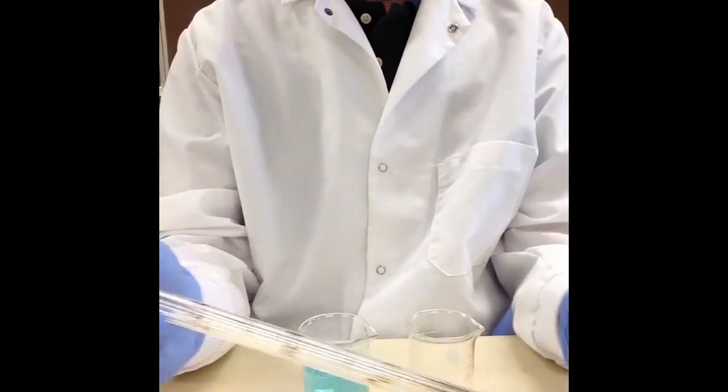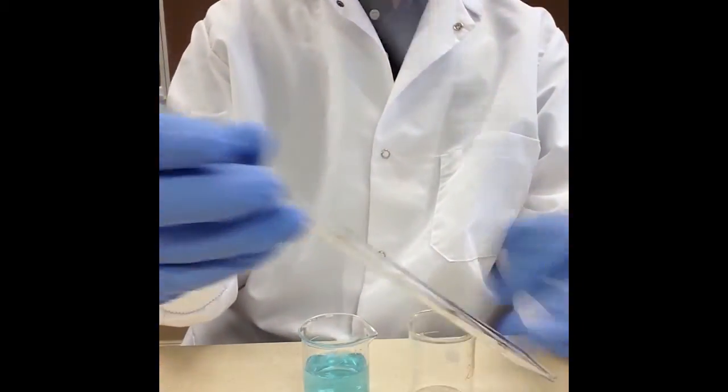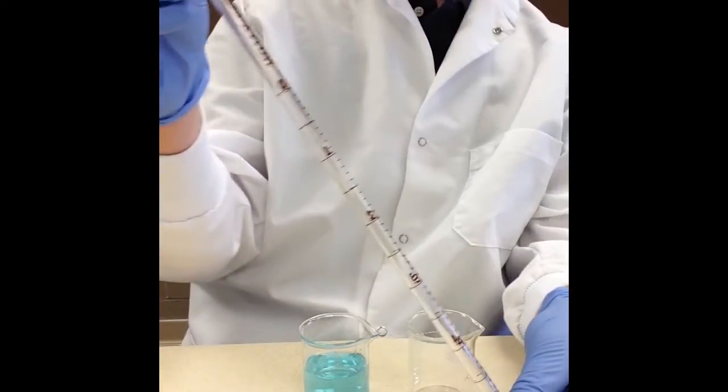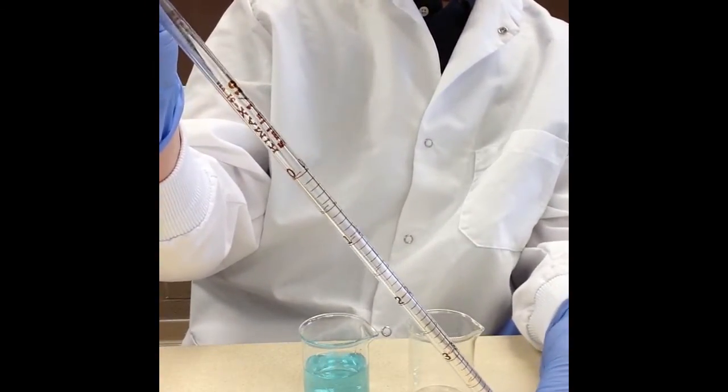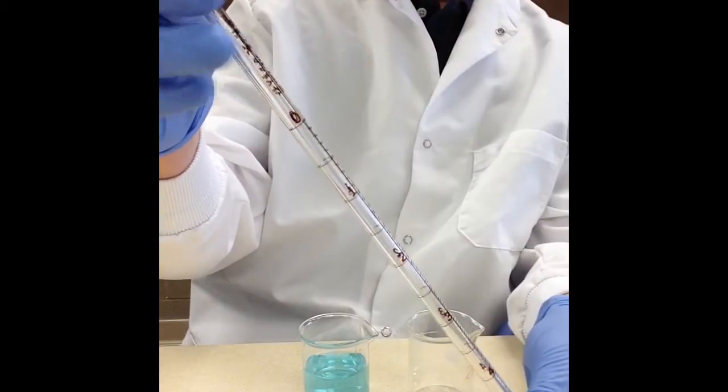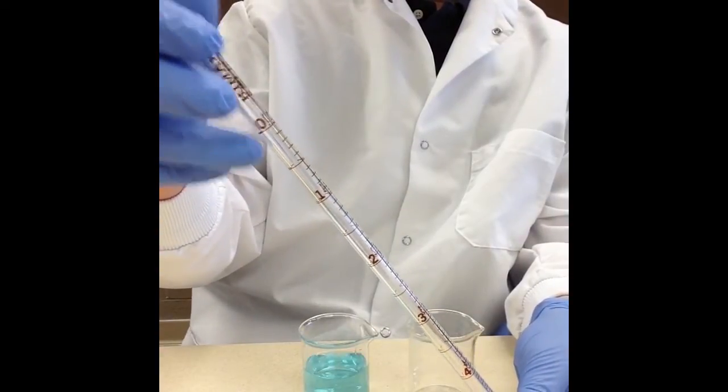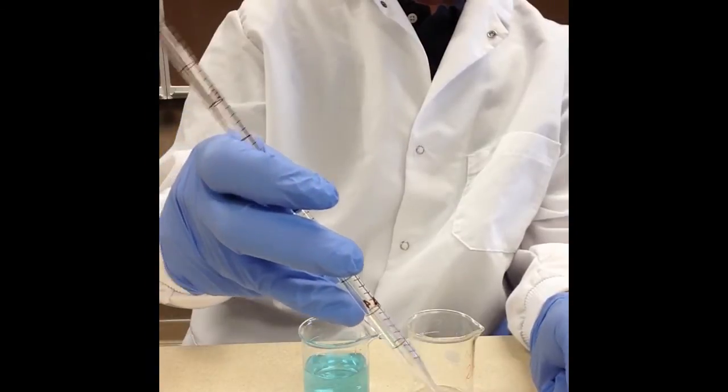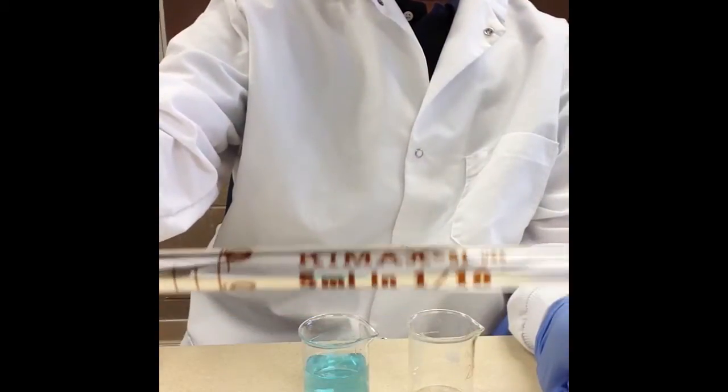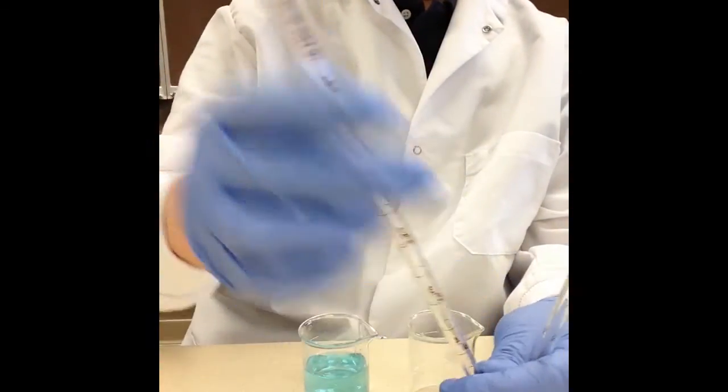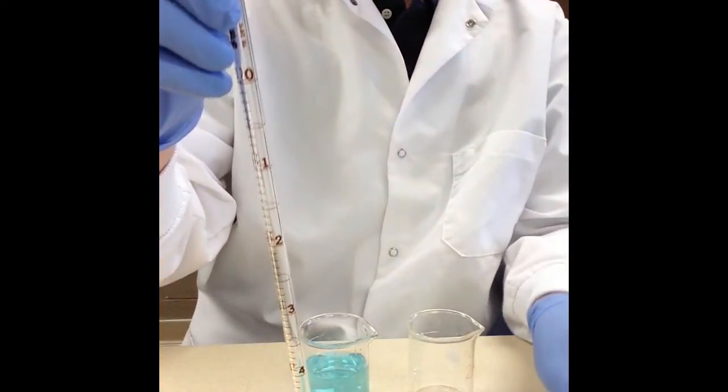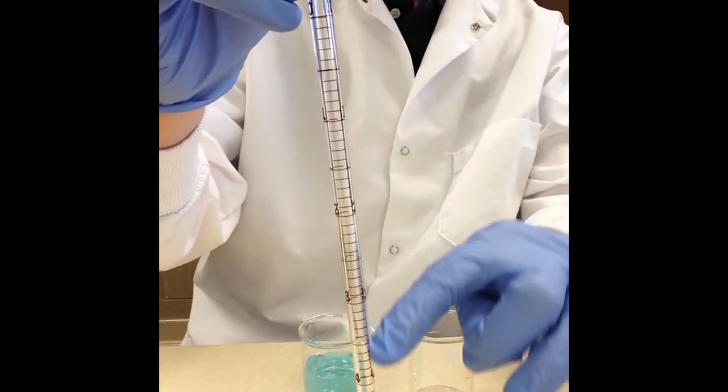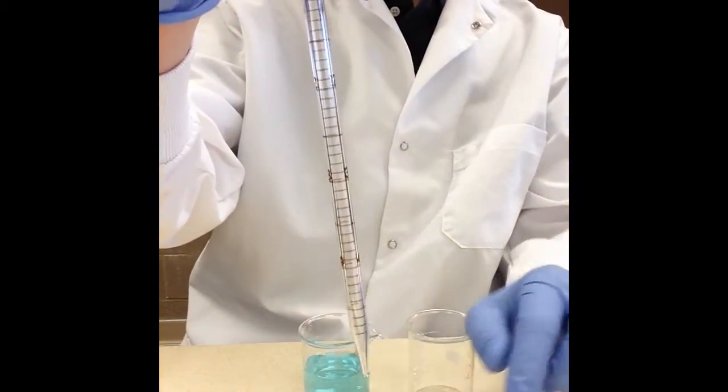The other two that we have are variable volume. This is a serological and this is a 5 mL serological and you can see that it starts here at 0, goes 1, 2, 3, 4, and then there's no 5. On the side it says this is a 5 mL, so basically what that means is if you want 5 mLs delivered you take it up to 0 and then you let it go all the way through the tip.